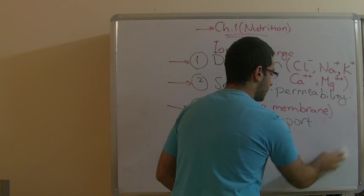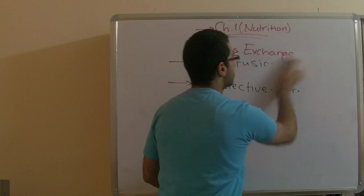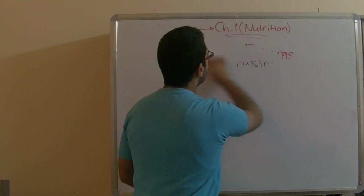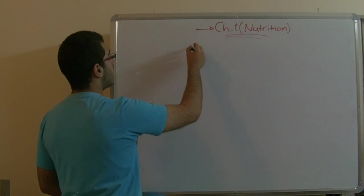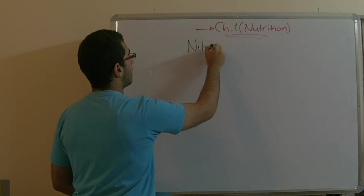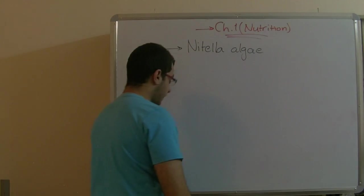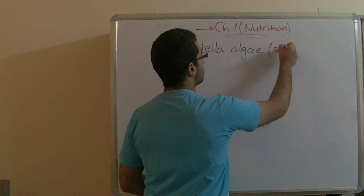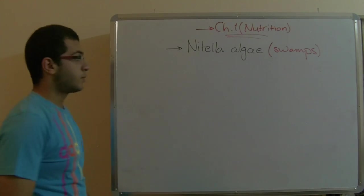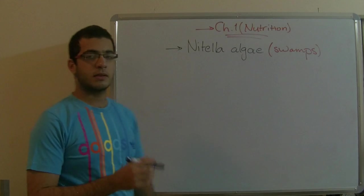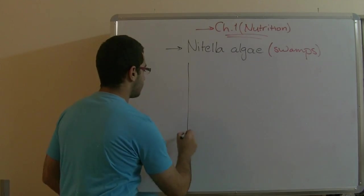For example, researchers carried out an experiment involving a kind of algae called Nitella algae, which live in swamps. The results of the experiment examined the concentration of salts inside the cell sap of the Nitella algae and outside, in the soil medium — the swamp water. Here we have a graph to illustrate this.